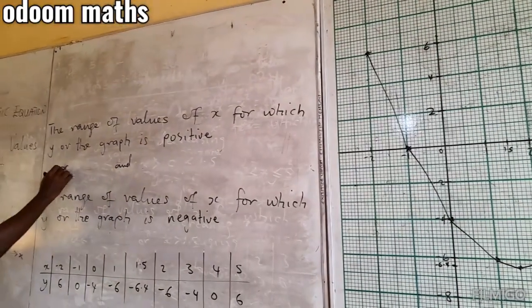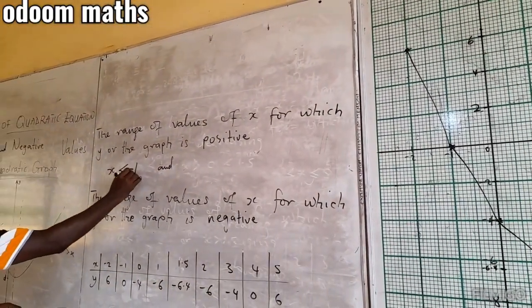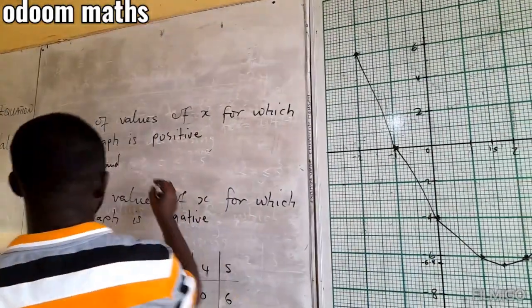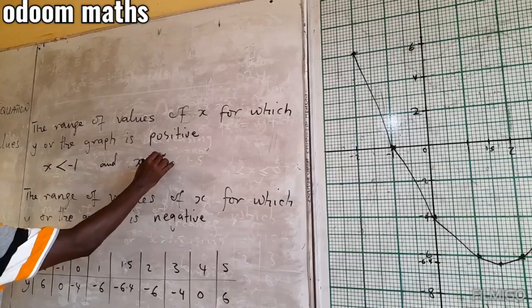We say x is less than negative 1 and x is greater than 4.